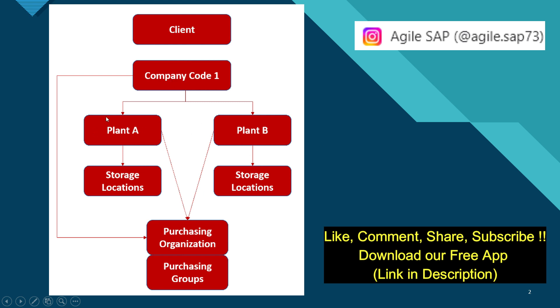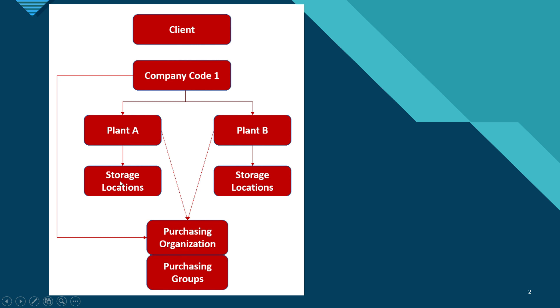A plant is assigned to storage locations — again this is a one-to-many relationship. One plant can have multiple storage locations, and multiple plants can have multiple storage locations.